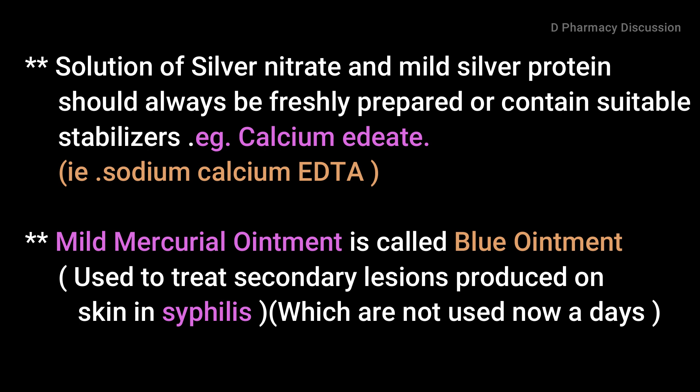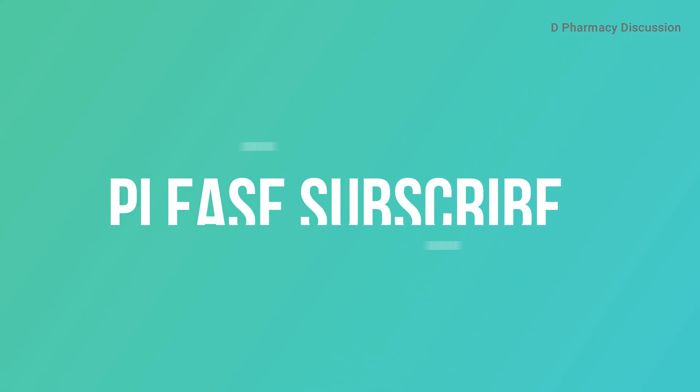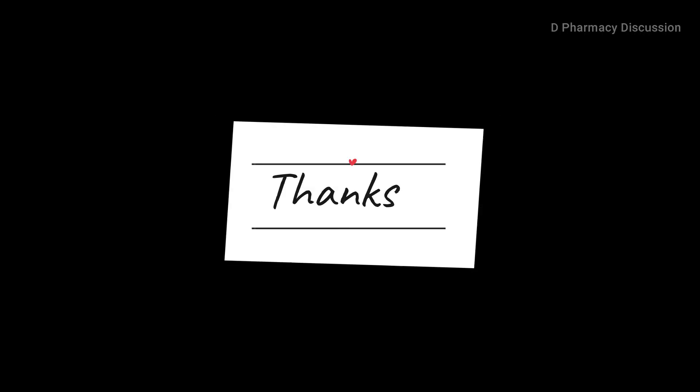Mercury ointment, also called blue ointment, has been used for the treatment of secondary lesions produced on the skin in syphilis, which is a sexually transmitted disease — though it is not used nowadays. If you found this useful, please like and share, and do subscribe. Thank you so much.